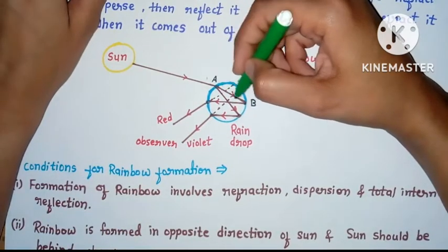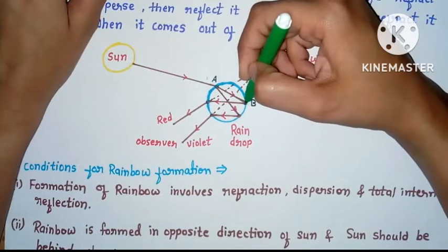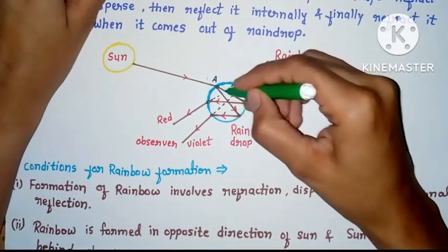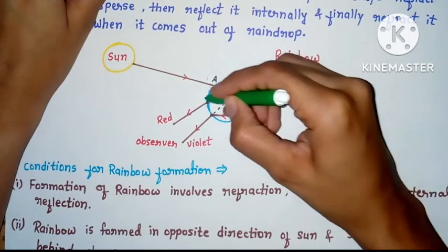After entering here, at this point total internal reflection occurs. This means after entering here, the light reflects back internally.